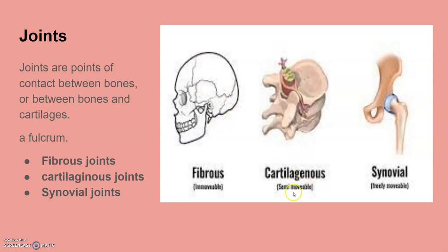The second type are cartilaginous joints, which are semi-movable. The bones join together with the help of cartilage, and the joints between adjacent vertebrae in the vertebral column are an example, permitting limited movement. The third type are synovial joints, which have a fluid-filled cavity between the surfaces of the two bones, allowing free movement. Examples include: ball and socket joints (between the humerus and pectoral girdle), hinge joints (at the knee), pivot joints (between atlas and axis), gliding joints (between carpals), and saddle joints.